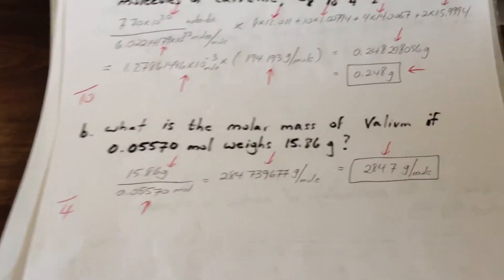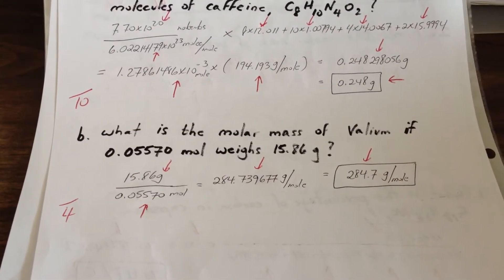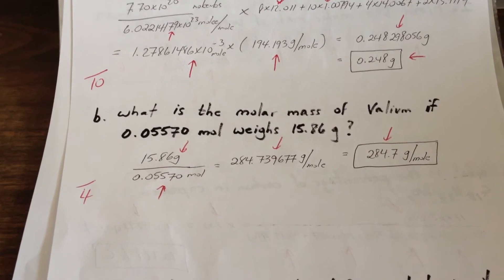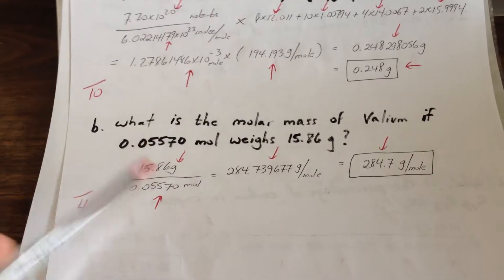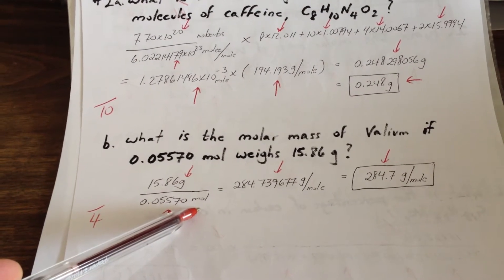B, what is the molar mass of Valium if 0.05570 moles weighs 15.86 grams? You'll see from the units, the way the question is arranged, that that's how you find the molar mass.